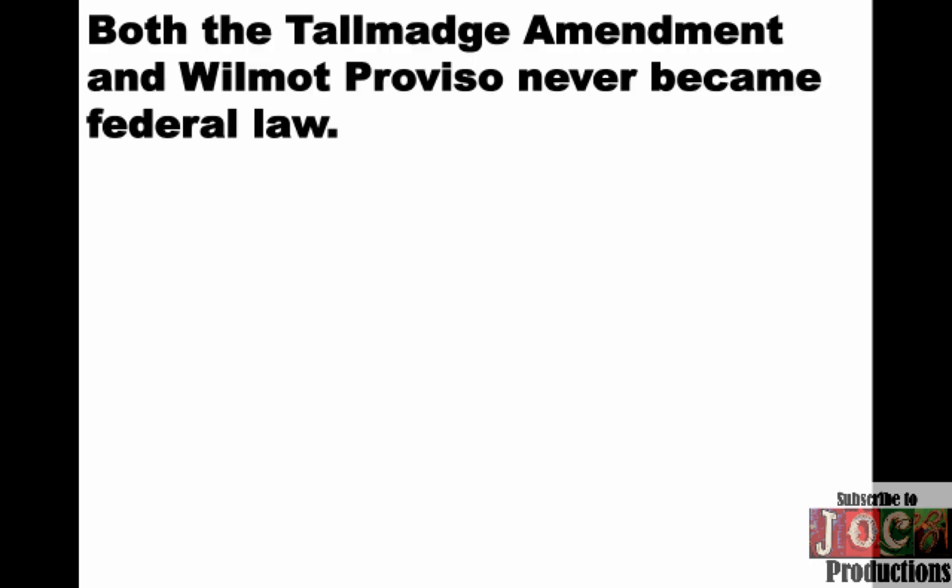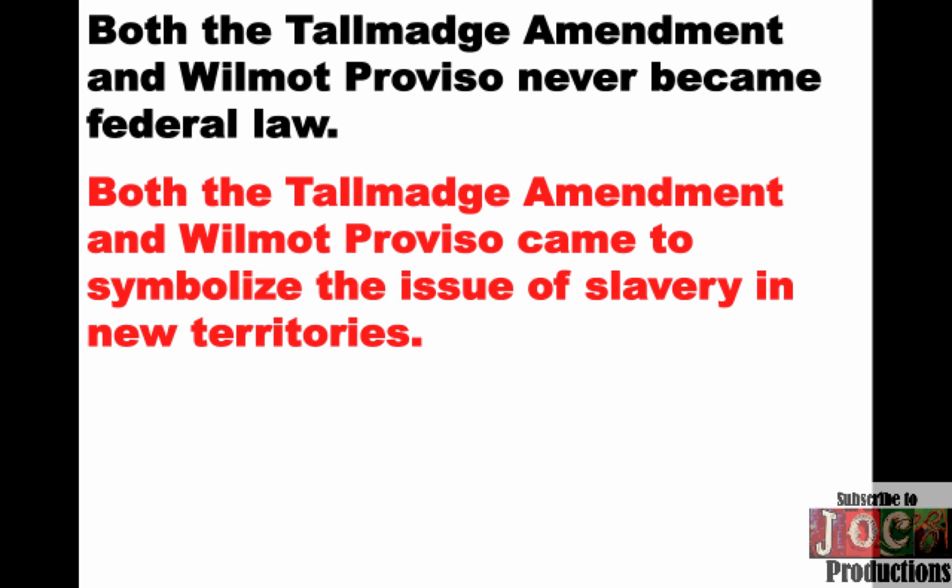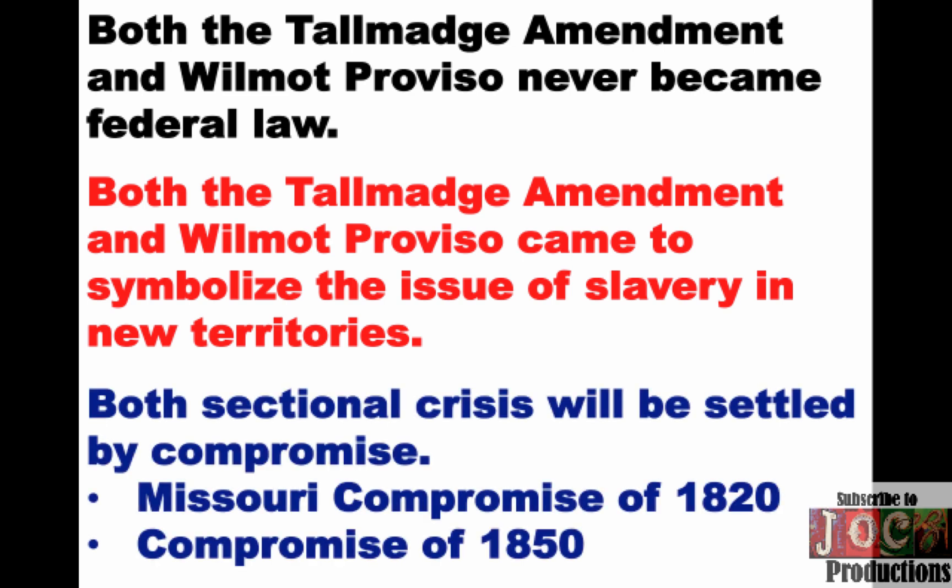The real big issue is that both the Talmadge Amendment and the Wilmot Proviso never become federal law — they both are defeated. And yet, both the Talmadge Amendment and the Wilmot Proviso come to symbolize the issue of slavery in new territories and the sectional tensions that arise when trying to figure this stuff out. Both crises will be settled by compromise: the Missouri Compromise of 1820, and in another lecture we'll take a look at the Compromise of 1850.